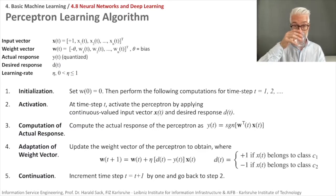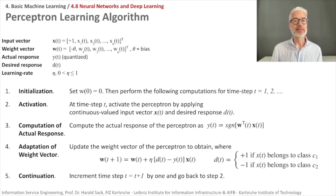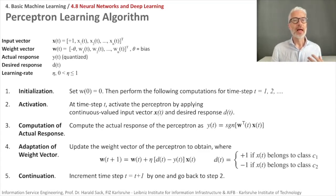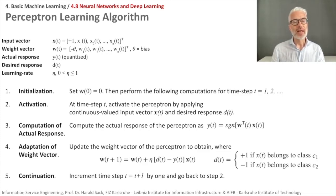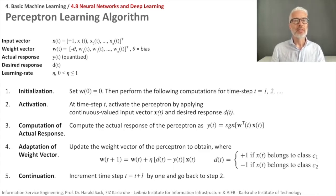Let's formalize the perceptron learning algorithm. We have an input vector x(t) — a transposed vector where the first input is 1, standing for the first weight w0 which is minus theta, the bias — followed by inputs x₁ to xₙ at time t, and weights w₁ to wₙ at time t. The actual response y(t) for a single neuron is quantized — either 0 or 1 — and you have a desired response and a learning rate eta between 0 and 1.